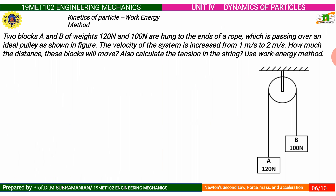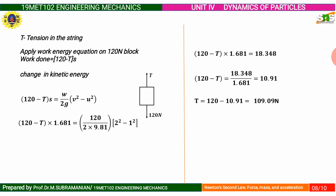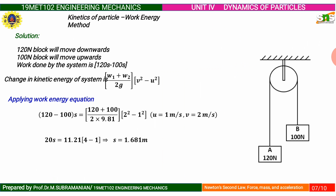Another example problem solved using the work-energy method. Two blocks A and B with weights of 120 Newton and 100 Newton are hung at the ends of a rope passing over an ideal pulley as shown in the figure. The velocity of the system increases from 1 meter per second to 2 meter per second. How much distance will the block move? Also, calculate the tension in the string. Use the work-energy method.